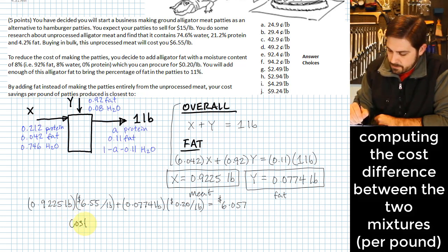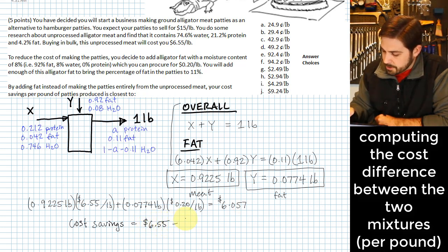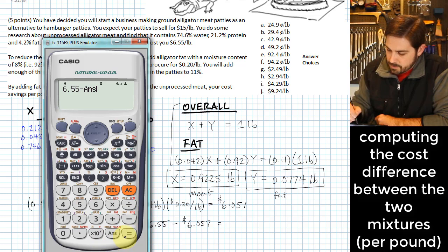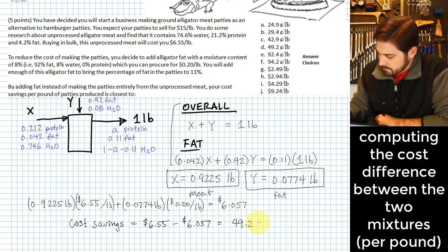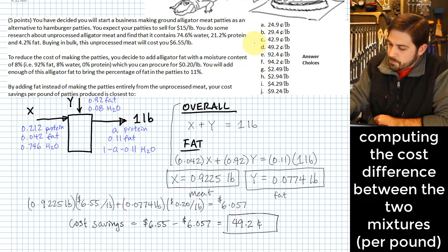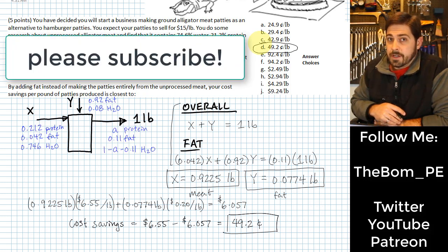Okay, well what's the cost savings then? The cost savings is going to be whatever it cost us originally, which is $6.55, minus this new cost. And if we plug these into the calculator, $6.55 minus the previous answer gives us a 49.2 cent cost savings per pound. And so we would answer with 49.2 cents per pound cost savings. So it looks like this could really be valuable, especially if you plan on having a lot of this meat that you sell. So we'll see you next time.